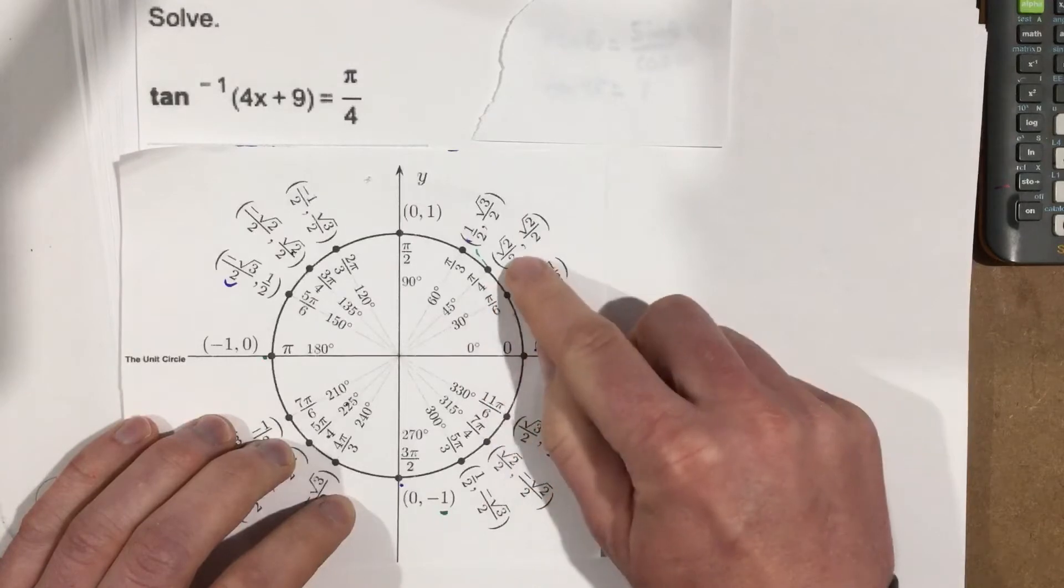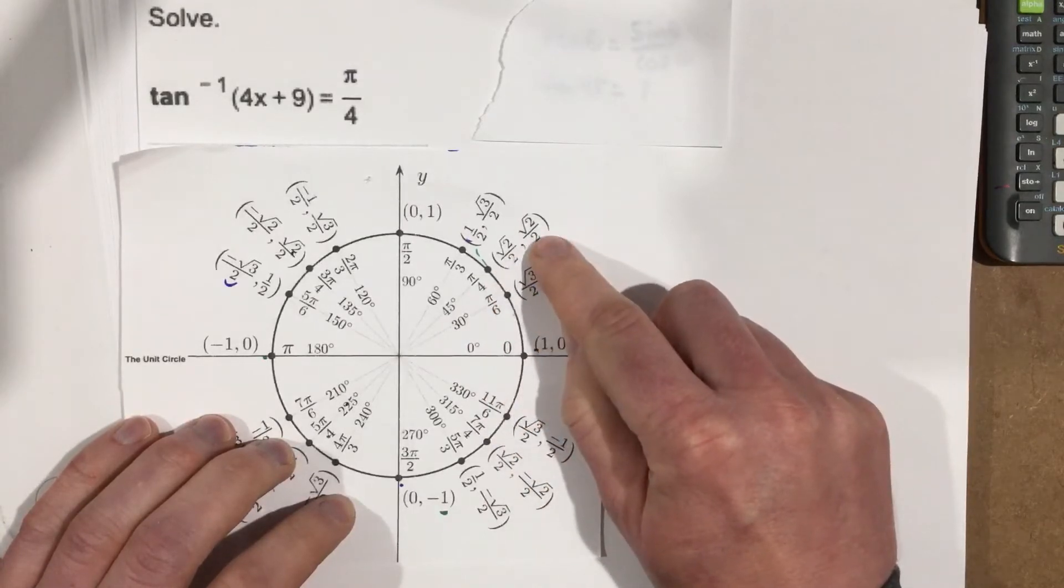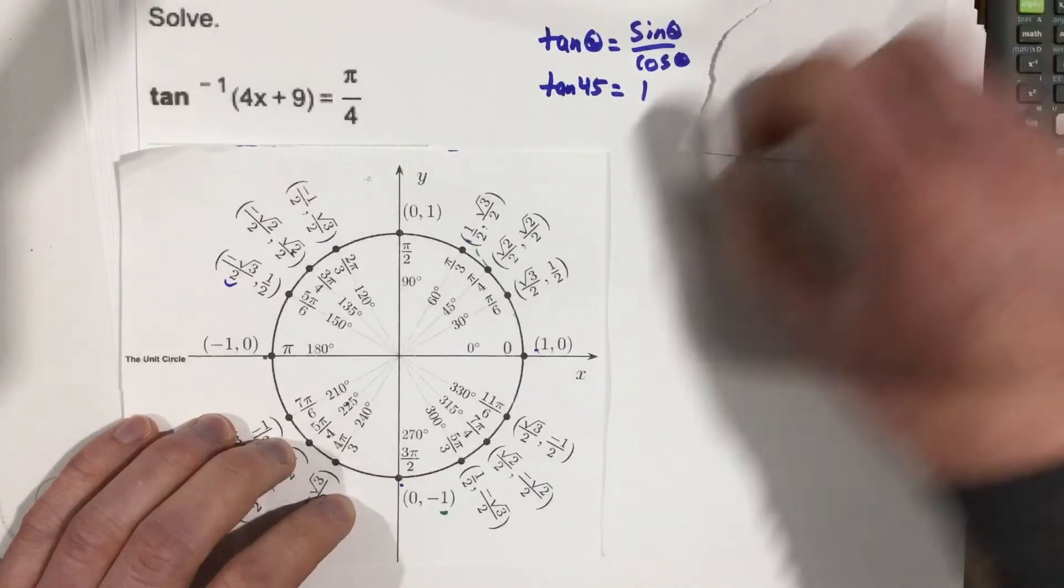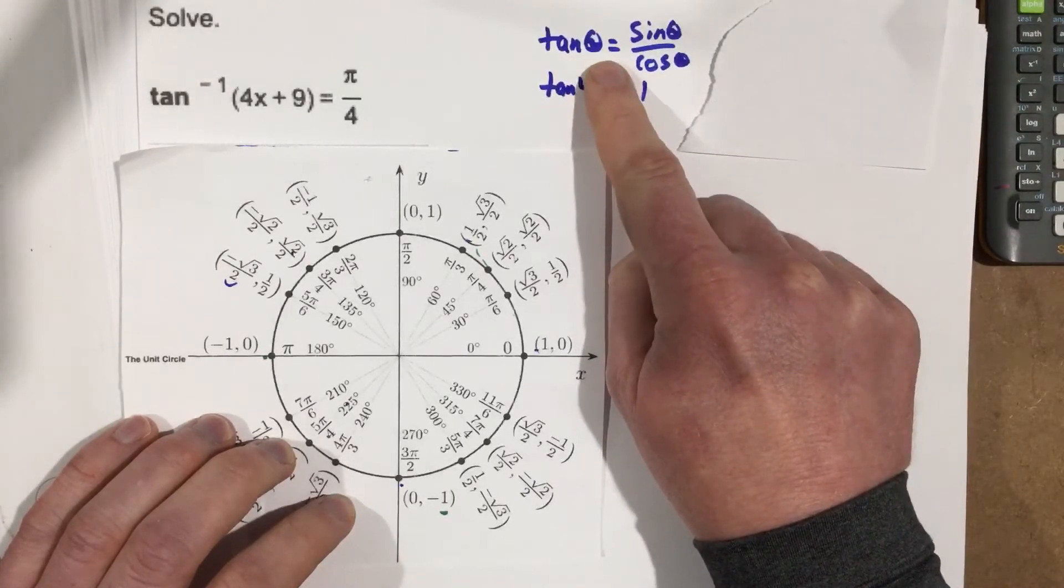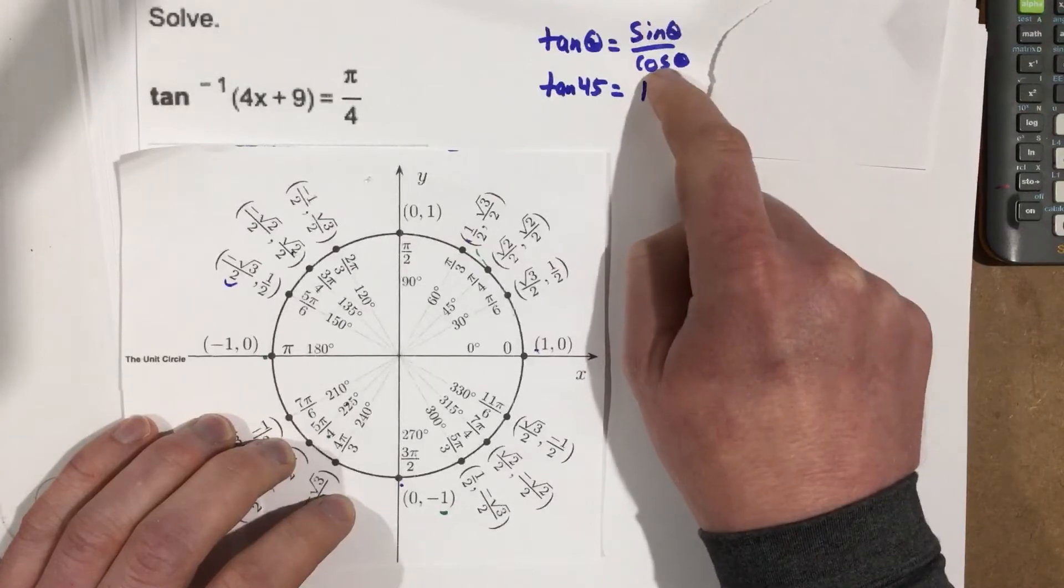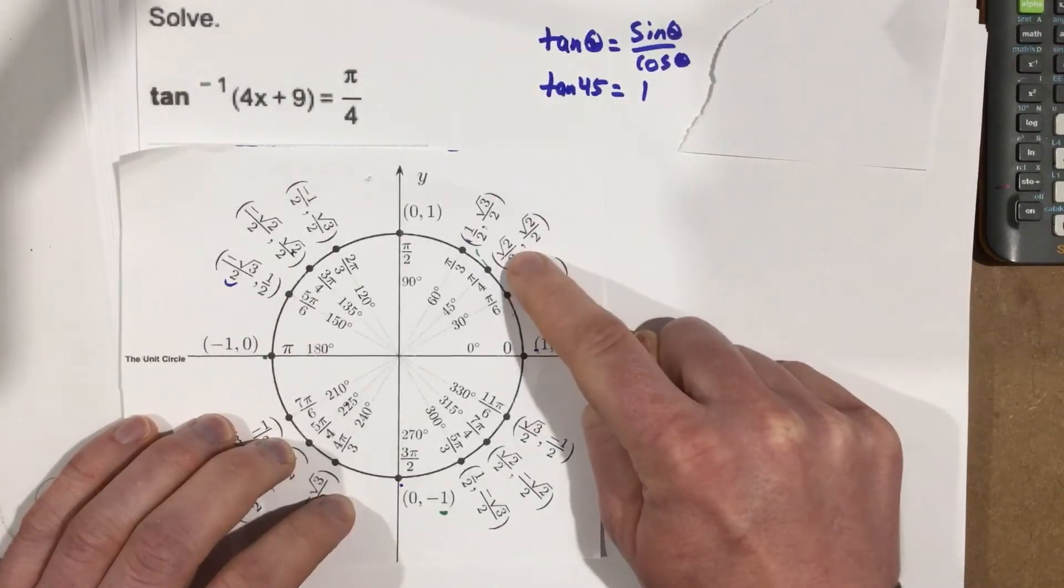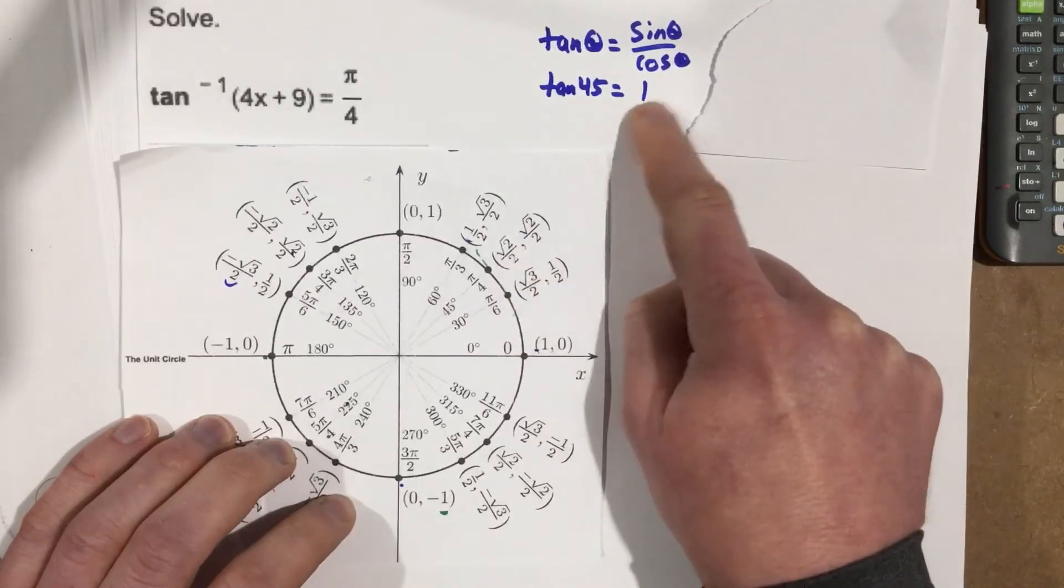I know that this is cosine, this is sine. And if I look at my identities, I know tangent theta is sine over cosine, meaning take sine divided by cosine. So tan 45 is really just sine divided by the cosine. They're the same thing, so that means tan 45 is 1.